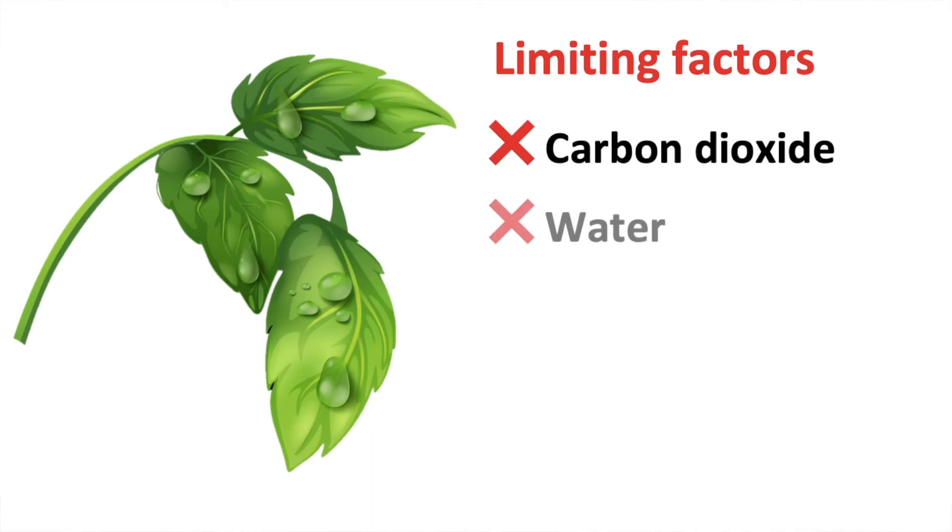Now that we have learnt what photosynthesis is, we must understand that if any of these elements are limited, then it will affect the rate of photosynthesis. So, if there's not enough carbon dioxide, water or light energy, then the rate of photosynthesis will be affected. Therefore, the rate of photosynthesis will be lower.